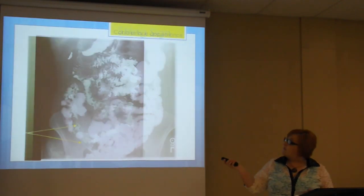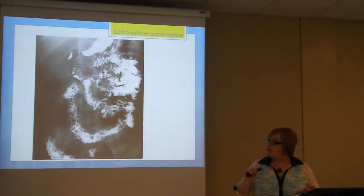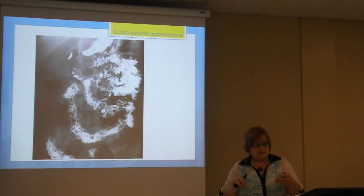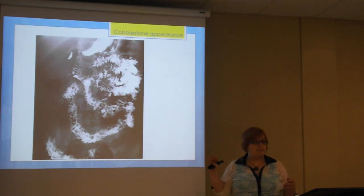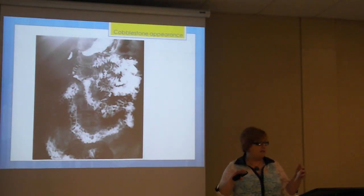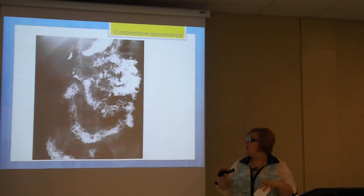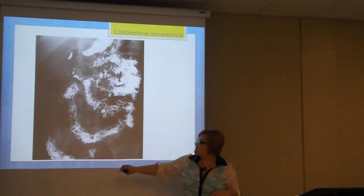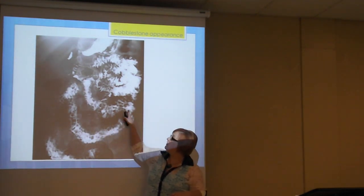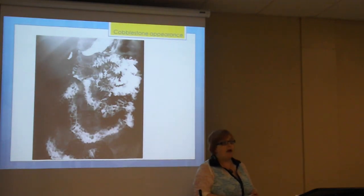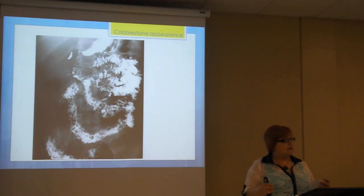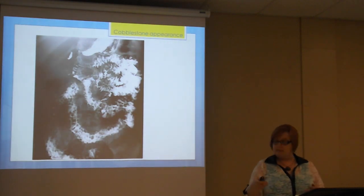Another common sign is the cobblestone appearance, which is produced by the transverse and longitudinal separations of the submucosa and mucosa separating out and creating a cobblestone-like appearance. You can see the pattern and it looks like a cobblestone pathway. Those are three major signs on a radiograph that indicate a Crohn's patient.